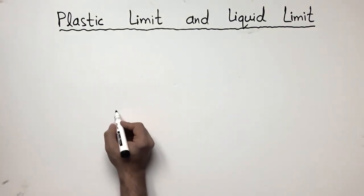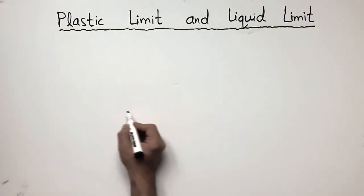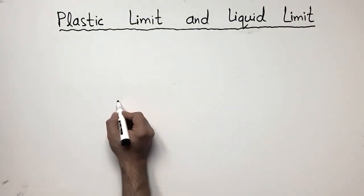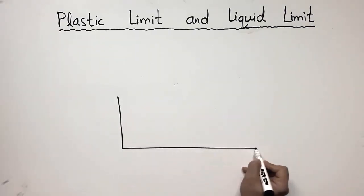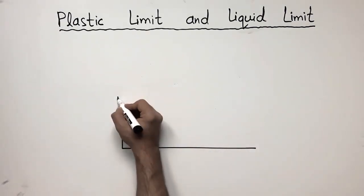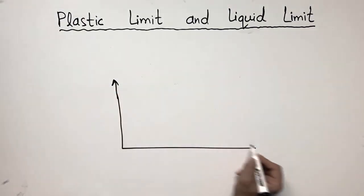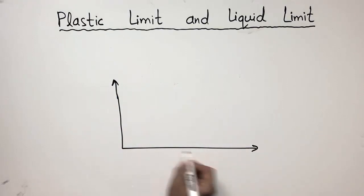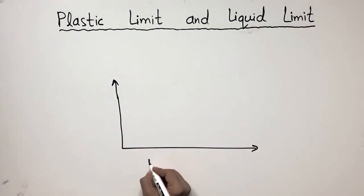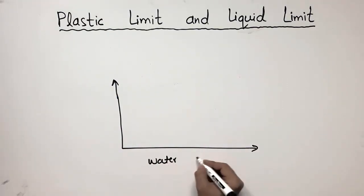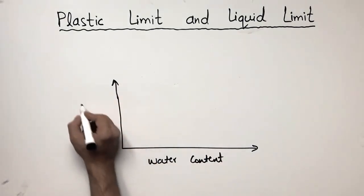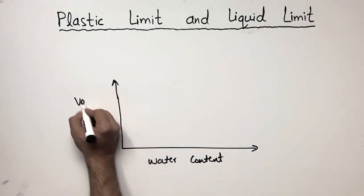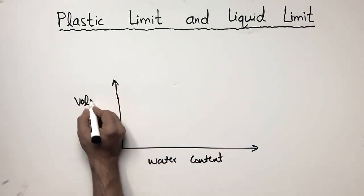To explain this, I will try to explain with the help of a figure. Let us consider this is an x-y graph in which the x-axis shows the water content and the y-axis shows the volume of the soil mass.